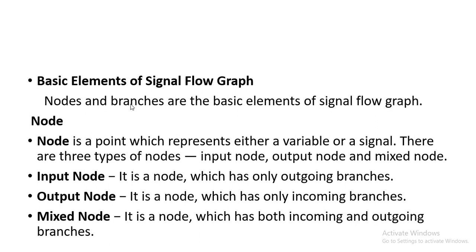A node is a point which represents either a variable or a signal. There are three types of nodes: input node, output node, and mixed node. The input node is a node which has only outgoing branches — it is inputting something, so it will have outgoing branches.